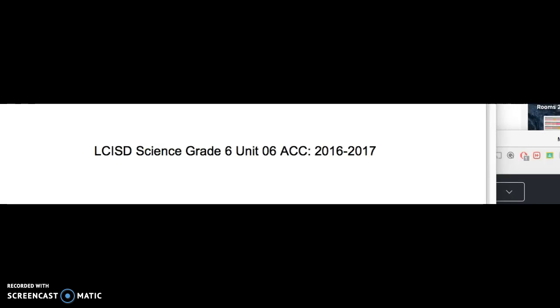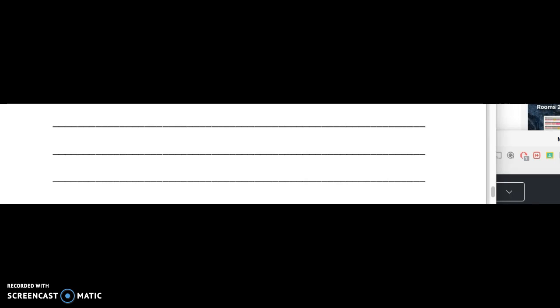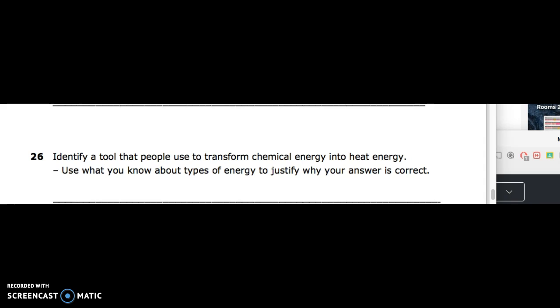LCISD Science, grade 6, Unit 6, Accelerated, 2016-2017. This is questions 25 and 26. Question 25 for accelerated students only: A flat solar cell is shown above. Energy is transformed all the way to lighting a bulb. Explain how solar energy is converted into electrical energy. Number 26: Identify a tool that people use to transform chemical energy into heat energy. Use what you know about types of energy to justify why your answer is correct.